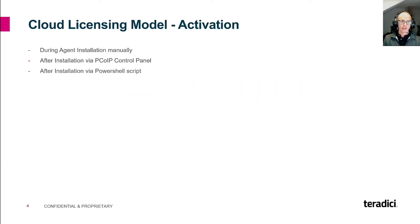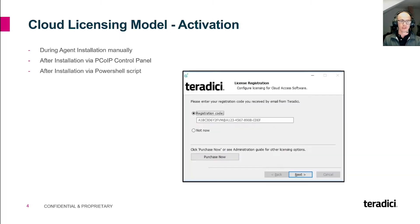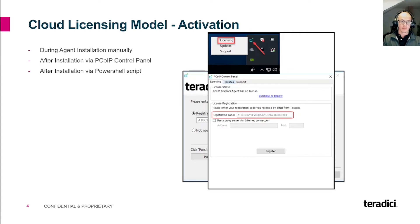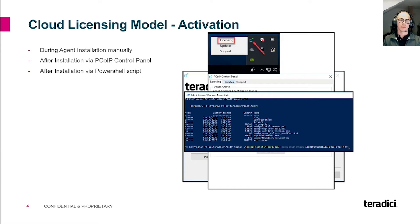You can activate the licenses by entering the registration code during the installation. Keep in mind that you can only enter a cloud licensing registration code by adding them to the agent via its control panel after the installation, or via a PowerShell script inside the agent installation folder on the workstation itself.